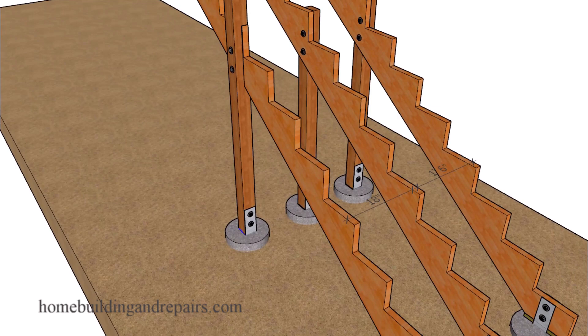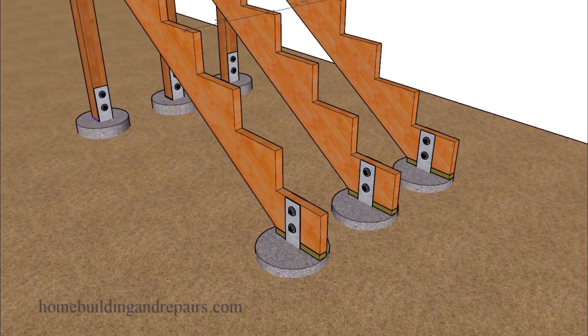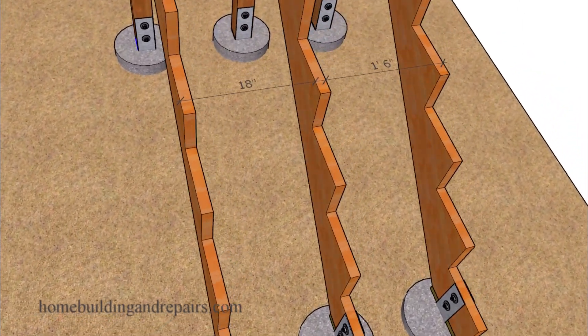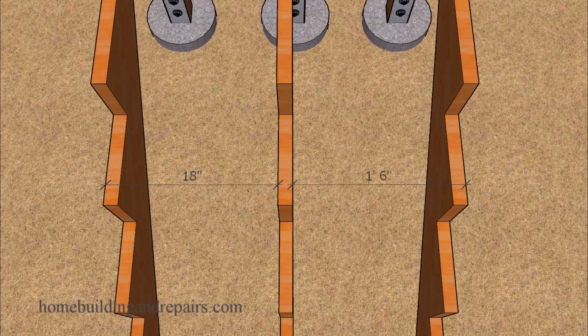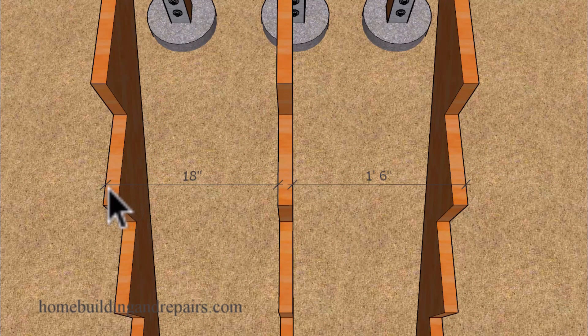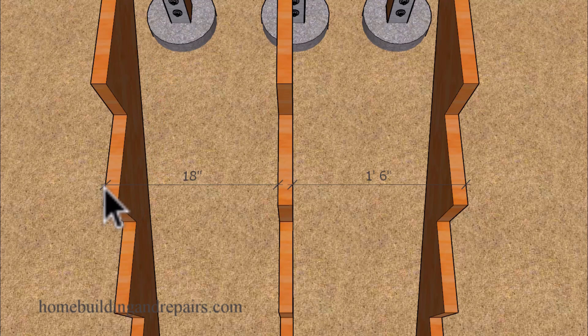And of course the bottom will be supported by footings. And the maximum spacing on the stringers will be 18 inches on center. And that measurement can be taken from the left side of the stringer to the left side of the center stringer, or from the center of the stringer to the center of the stringer.